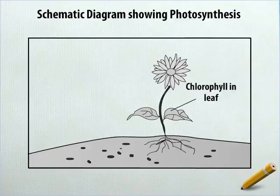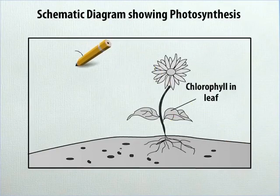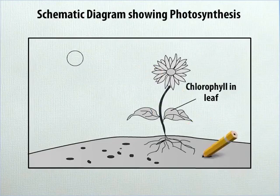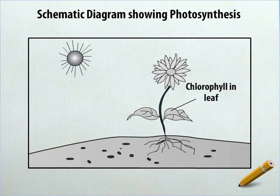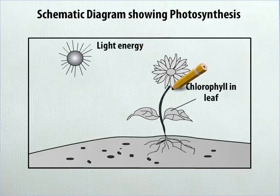On the upper left-hand corner of the sheet, draw in shade a circle. Around the circle, draw some lines touching it as shown. On the right of this structure and slightly above it, write light energy.